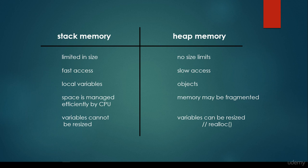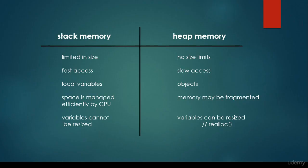For stack memory, the space is managed efficiently by the central processing unit. For heap memory, it may become fragmented because it is managed by the software engineer and the programmer. We are not able to resize a variable on the stack memory. As far as the heap memory is concerned, variables can be resized with the help of the realloc method, for example, in C or C++. These are the main differences between stack memory and heap memory.